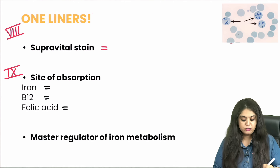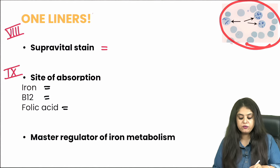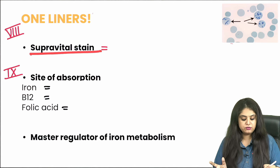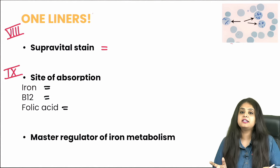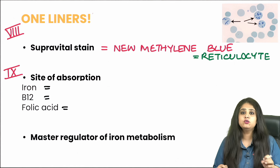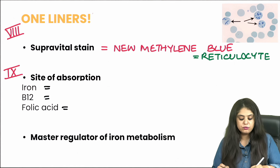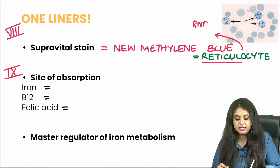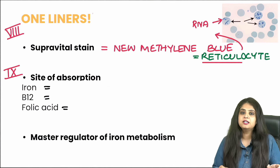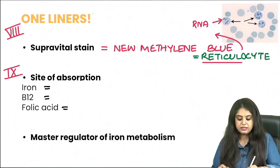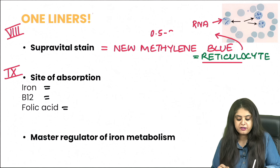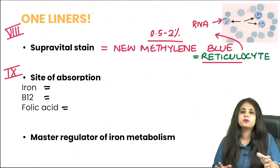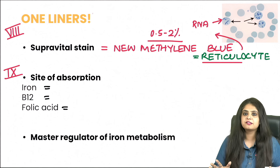Question eight involves an image from hematology asking about the supravital stain shown. The best supravital stain is new methylene blue, used for staining reticulocytes. Reticulocytes are named so because they are made up of a reticulum of RNA — the blue colored dots you see are RNA. The normal reticulocyte count is 0.5 to 2.5 percent.